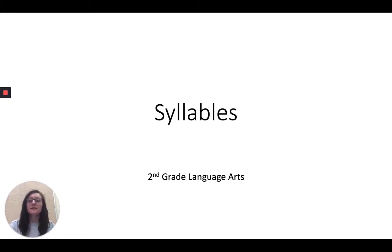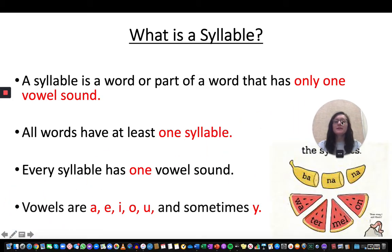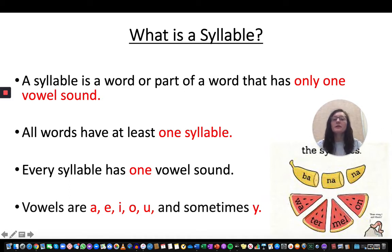First, we need to know what a syllable is. A syllable is a word or part of a word that has only one vowel sound. All words in our English language have at least one syllable, and every syllable has one vowel sound — that's going to be very important for us to remember.